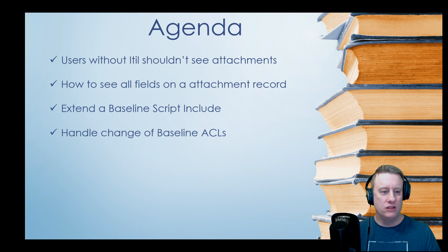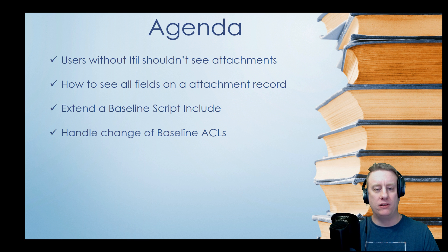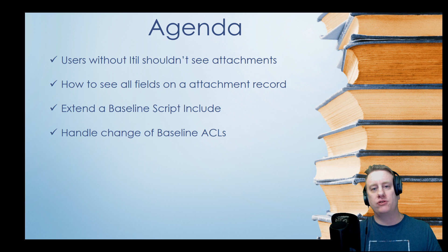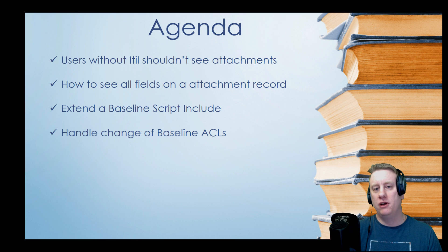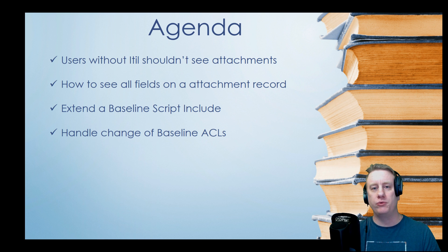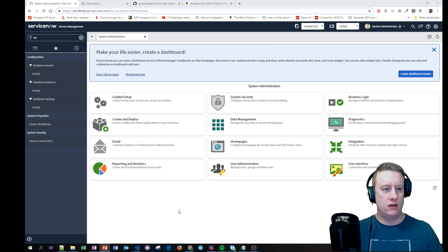So, this is what we're going to look at today. Users without ITIL shouldn't see an attachment if it's been uploaded by a user with any ITIL role. We're going to look at how we can see fields on an attachment record, and I'll explain that more shortly. We'll look at how we can extend the out-of-the-box script include and use that for ourselves. We will also run into some issues around how to change out-of-the-box stuff - some people say deactivate and create your own, some say just change it. We'll talk about that when we get there.